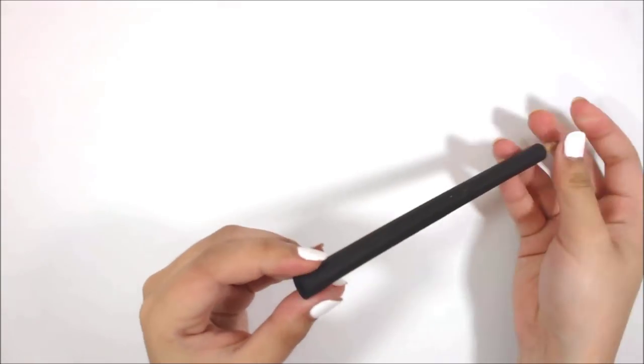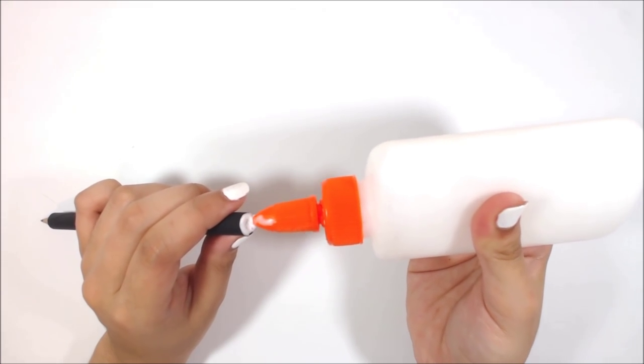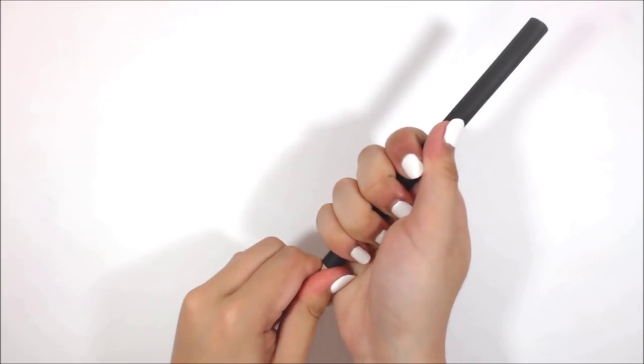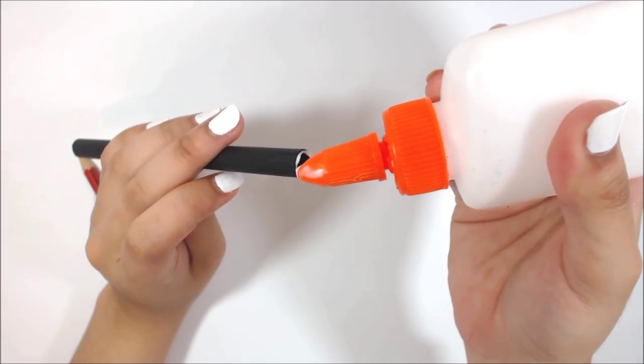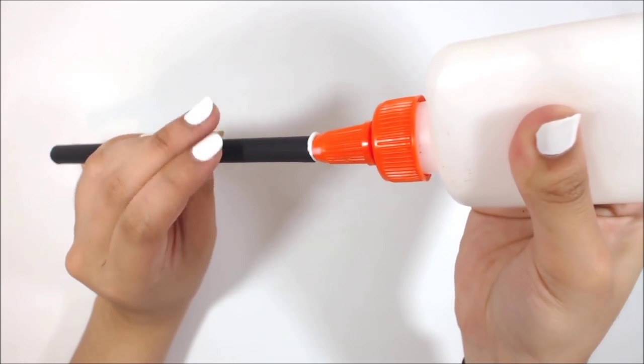So I added glue to the ends to secure the rolled paper inside so it doesn't move around. And I also recommend adding glue to the hollow section so that the pencil will fit in nicely even when it's shorter than two centimeters. And let that dry!